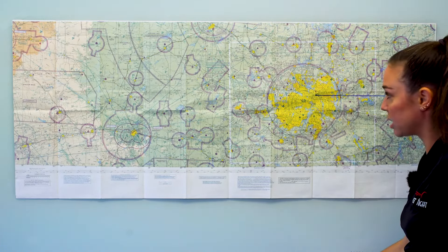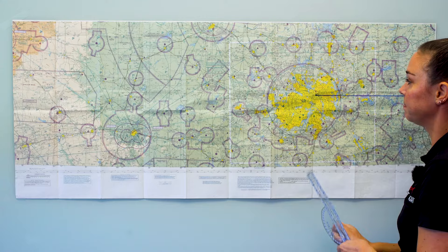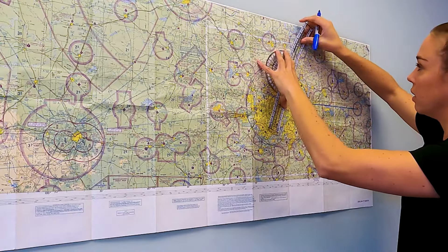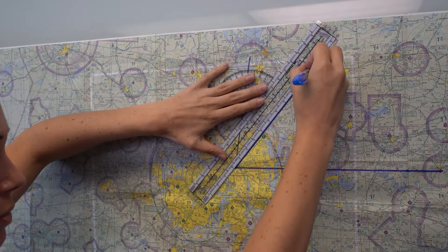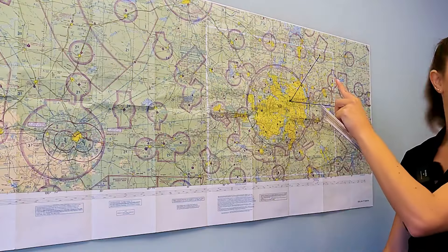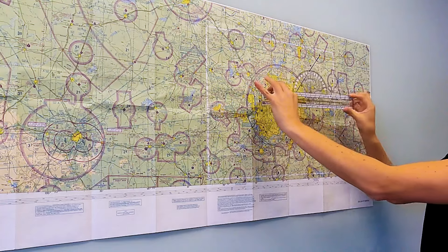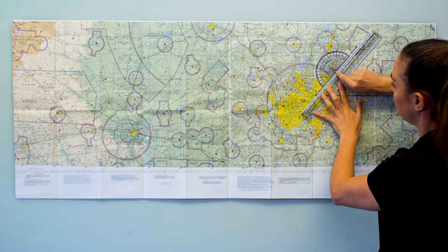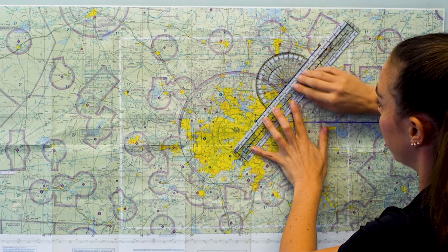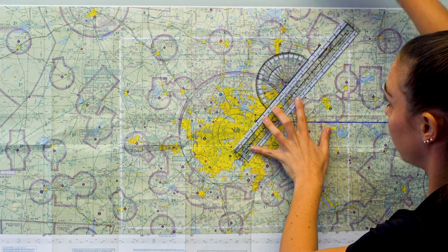Let's say our course line is headed a different direction, right? Let's use this one. Now we're flying a little bit more northeast, right? So let me take this plotter. I'm going to put the top edge of the ruler on the course line and I'm going to slide this hole or the grommet right until it intersects a line of longitude.